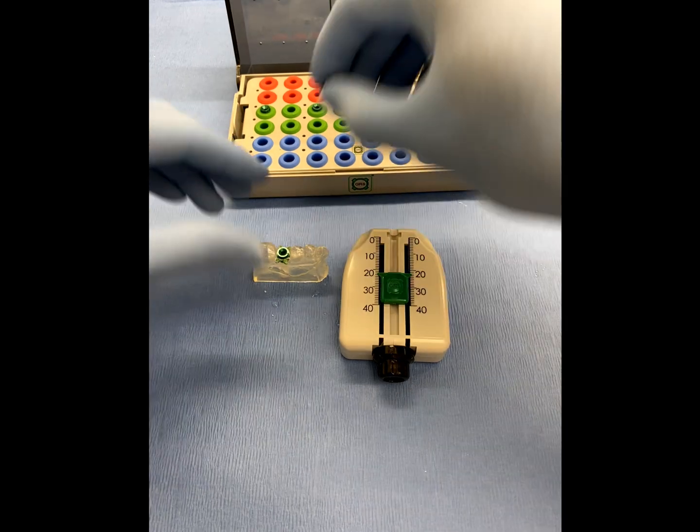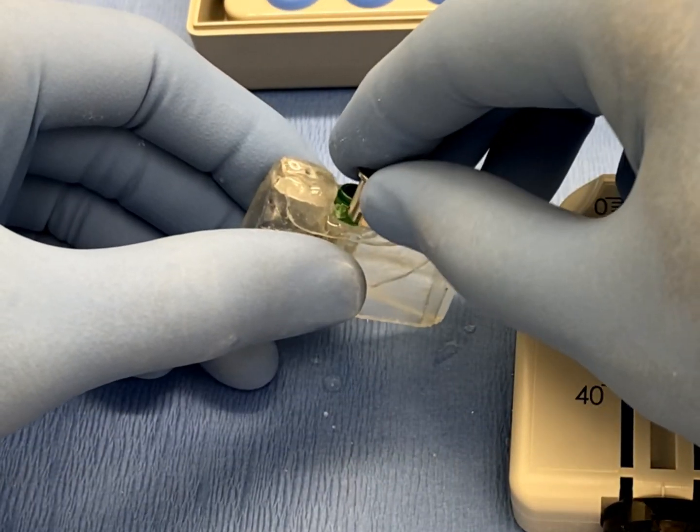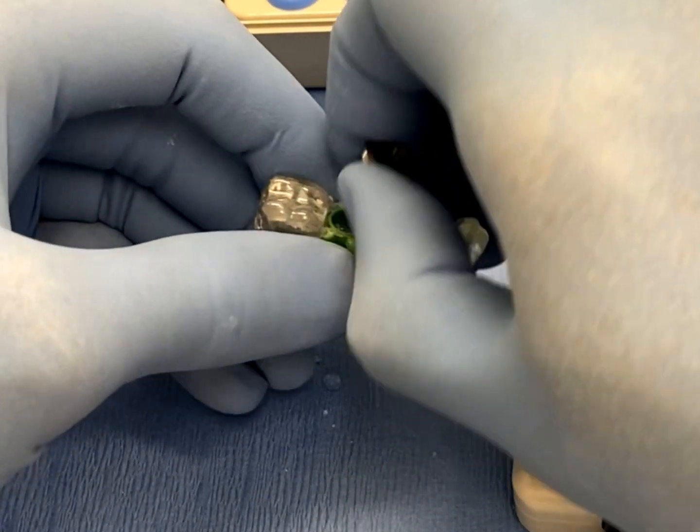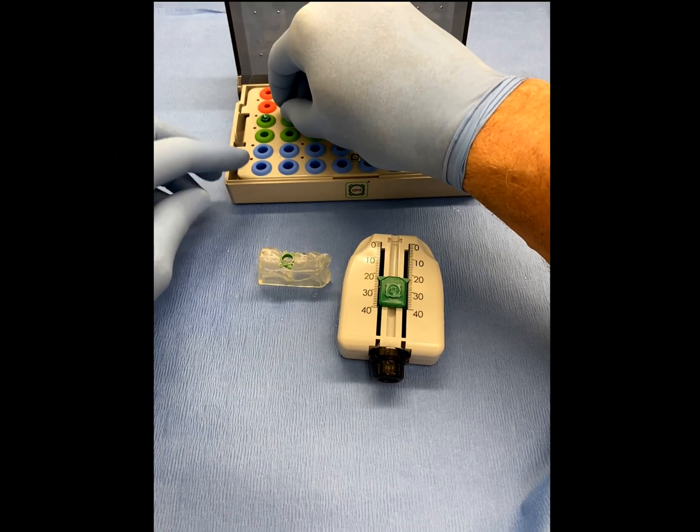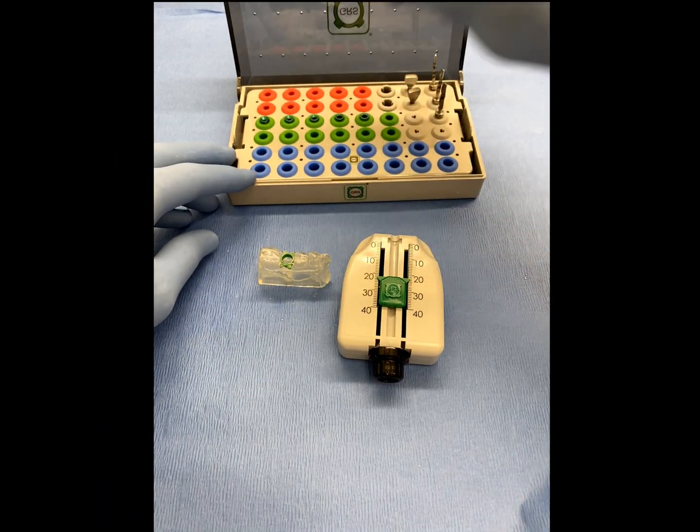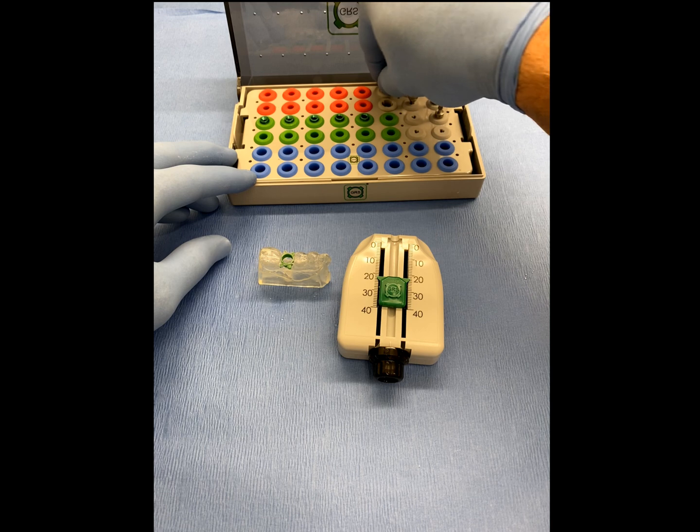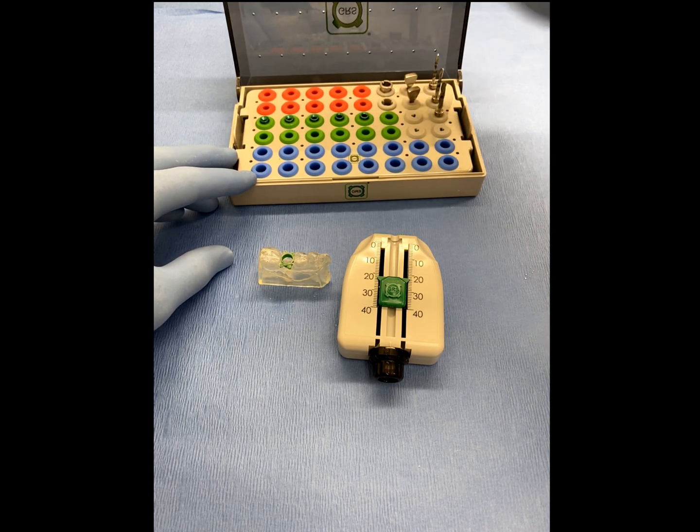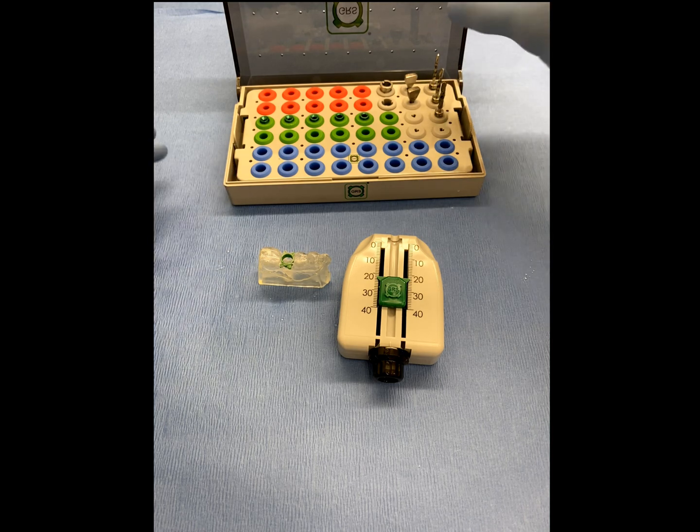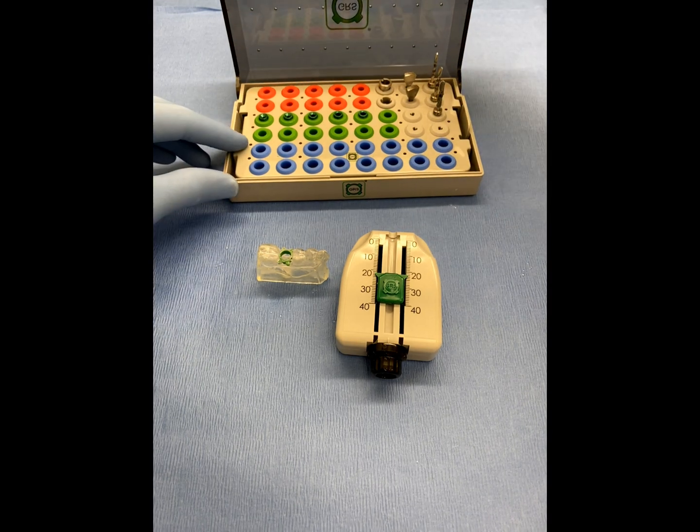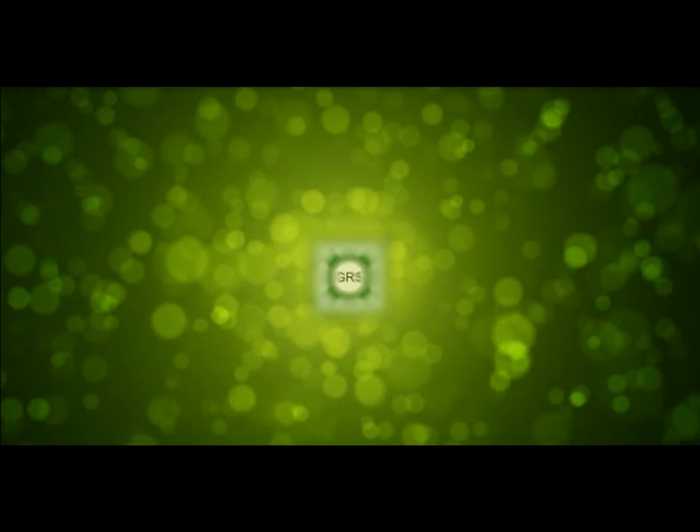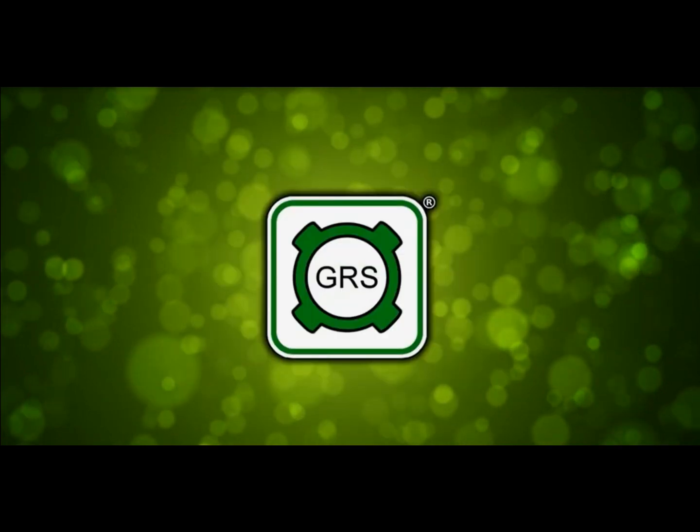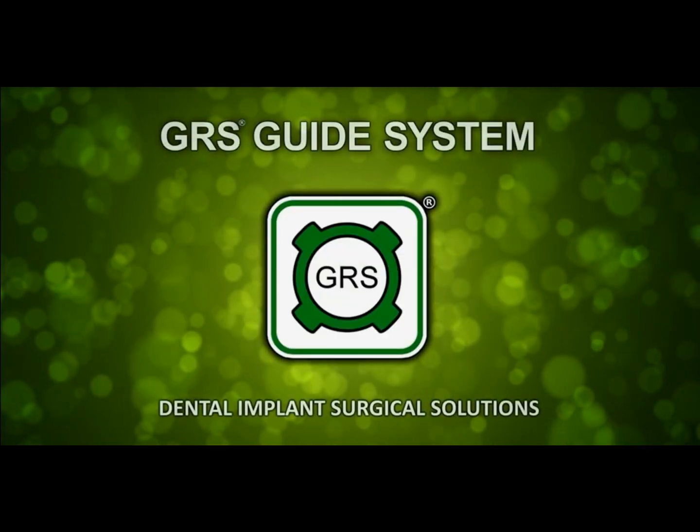Once completed, place all drills with the affixed drill stops and drill sleeves used in this process into the GRS surgical cassette and sterilize according to current infection control guidelines. Finish by disinfecting the GRS surgical guide by following the guidelines applicable to all removable oral appliances. The GRS surgical guide is now ready for clinical use and will provide for the most accurate, precise, and convenient dental implant placement available today.